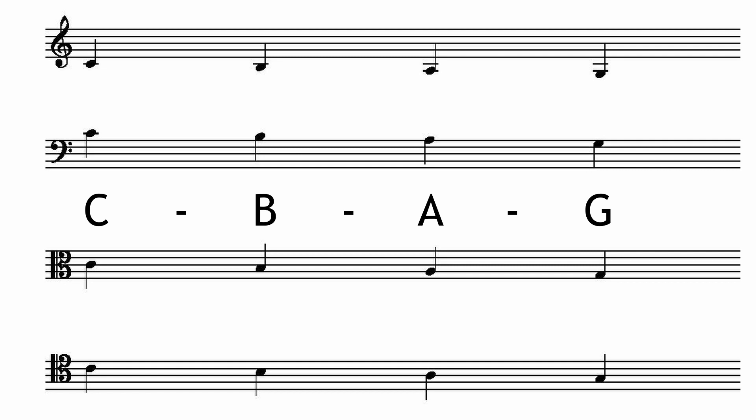Violas use the alto clef because that's the range they typically play in. Cellos and trombones use the bass clef and when they go into high notes, they can switch into using the tenor clef. Here's another example with C going up to F all at the same pitch.